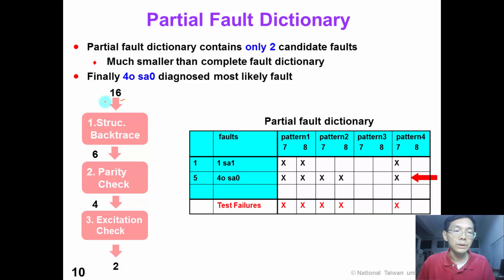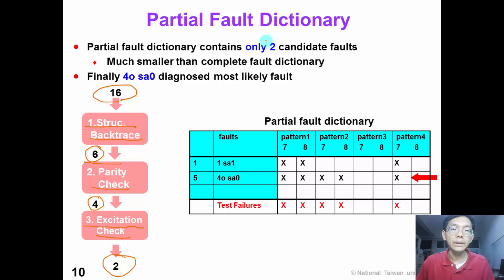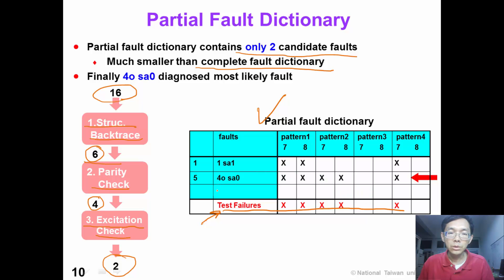Starting from the original fault list with 16 faults, after step 1, structural backtracing, we have only 6 faults remaining. After step 2, parity check, we are left with only 4 faults. After step 3, only 2 faults remain. Therefore, we can simulate only 2 candidate faults to produce the partial fault dictionary, which is much smaller than the complete fault dictionary. When we compare the test failure with the partial fault dictionary, we can identify 4O stuck-at-0 as the most likely diagnosed fault.